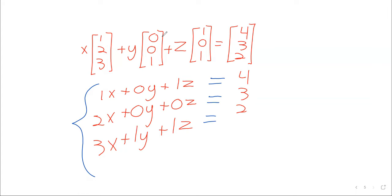We've got a system of linear equations: 1x + 0y + 1z = 4, 2x + 0y + 0z = 3, 3x + 1y + 1z = 2, and we can solve using Gauss-Jordan elimination. And I mean, obviously there's nothing special about these vectors I made up off the top of my head that caused this to work.